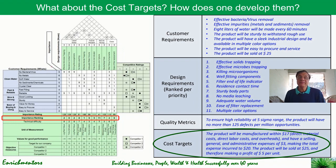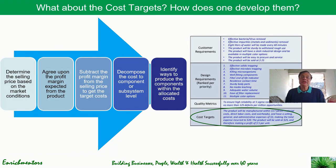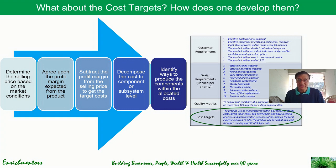Having ranked the design requirements, how do we now determine cost targets? You can determine cost targets in a very systematic process. You start with the selling price based on market conditions — you have your product and competitors' products, and marketing will tell you whether to price at parity, at a discount, or at a premium — and from that you determine the selling price.